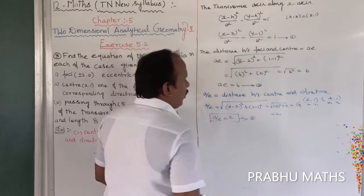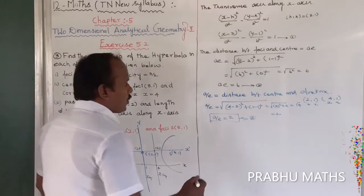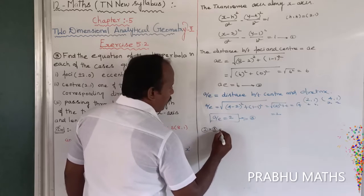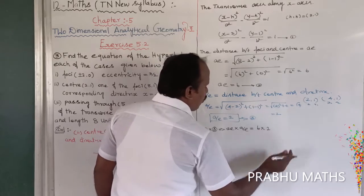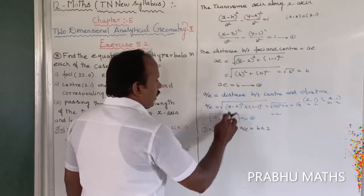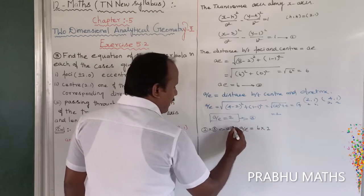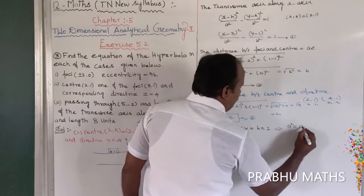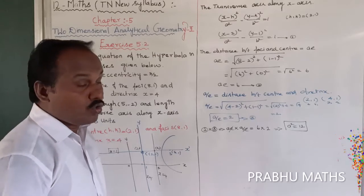Multiplying equation (2) and equation (3): ae × a/e = 6 × 2. The 'e' terms cancel, giving a² = 12. Therefore a² = 12.